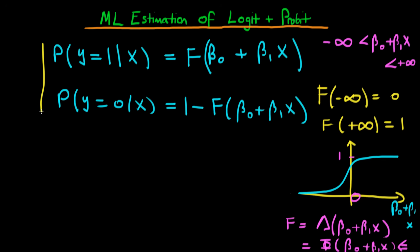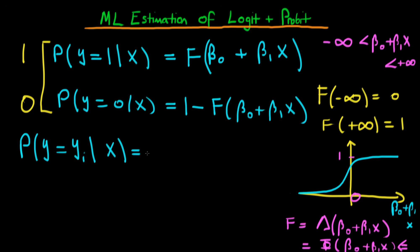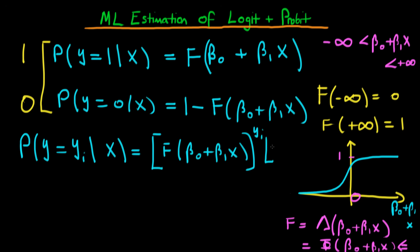These are our two probabilities corresponding to the two possible outcomes of our dependent variable, and we're going to use these to construct a likelihood function for one particular observation. We do this exactly the same way as for a Bernoulli random variable, because our dependent variable has just two potential values: 0 or 1. So the probability that y equals y_i given x is: f(beta 0 + beta 1 * x) to the power y_i, times (1 minus f(beta 0 + beta 1 * x)) to the power (1 minus y_i).